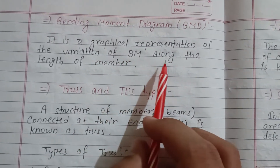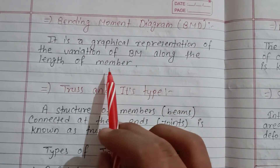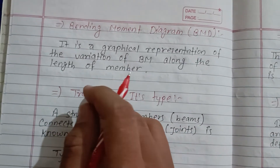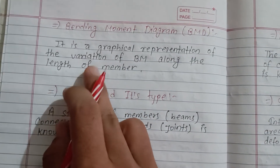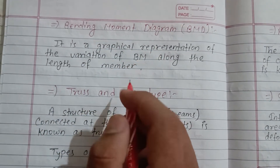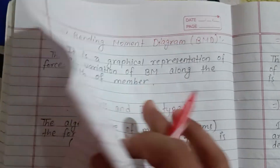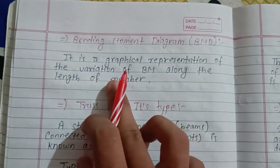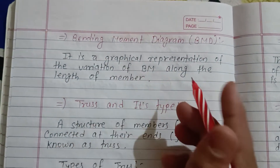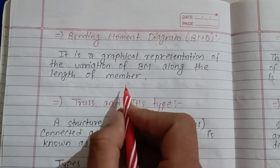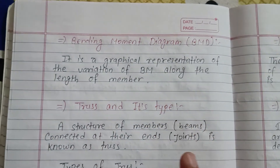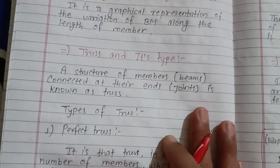The bending moment diagram (BMD) is a graphical representation of the variation of bending moment along the length of a member. The bending moment is given by force into distance.